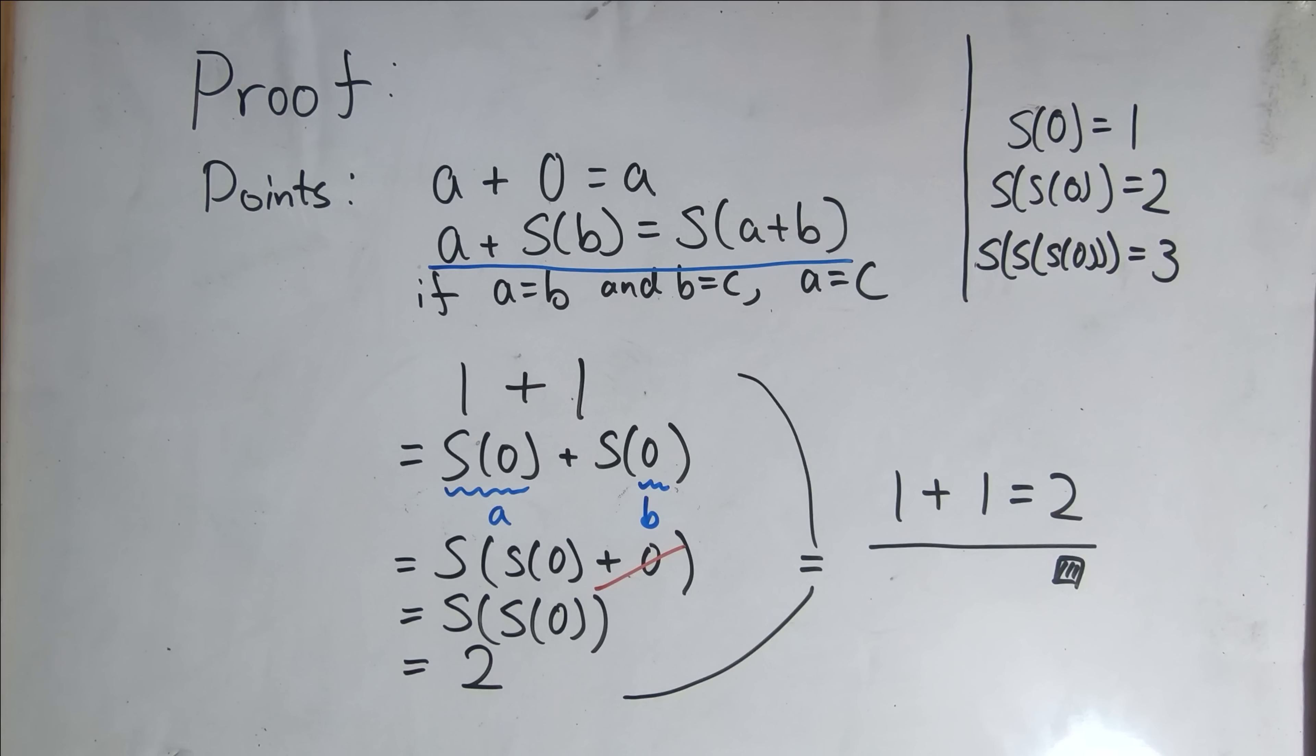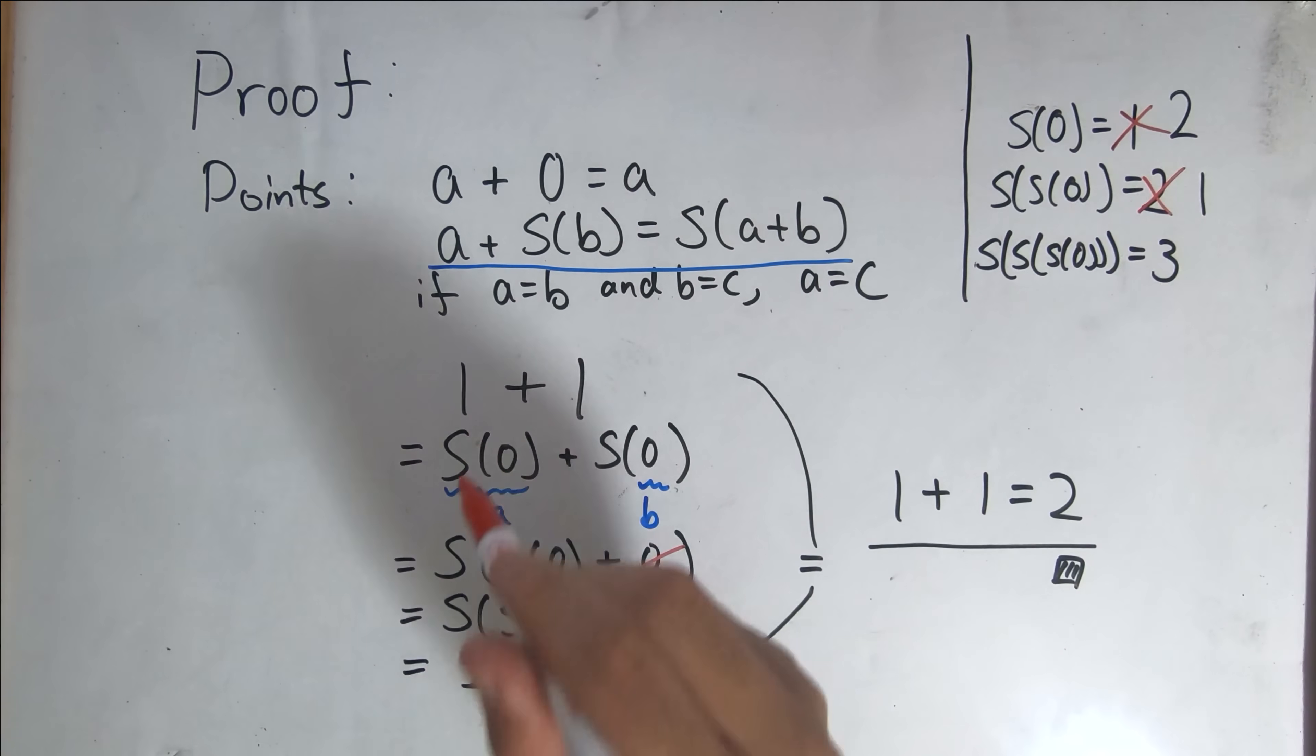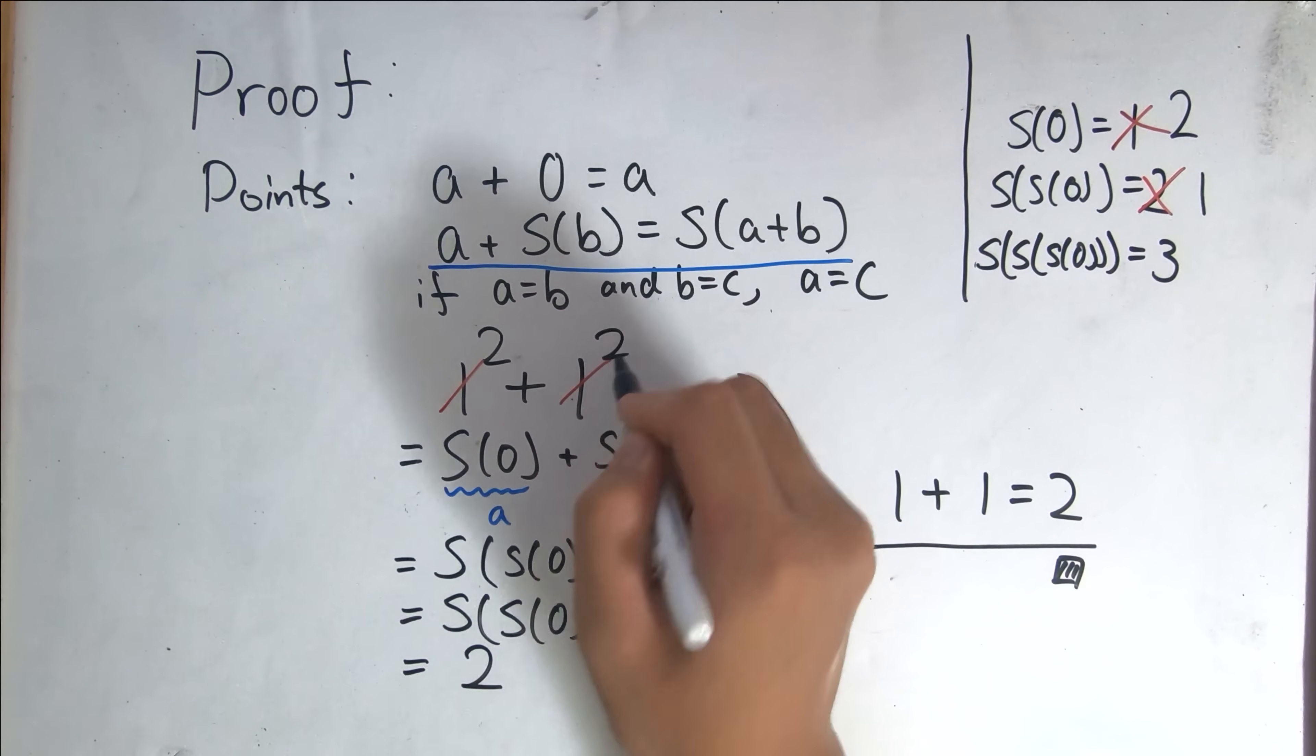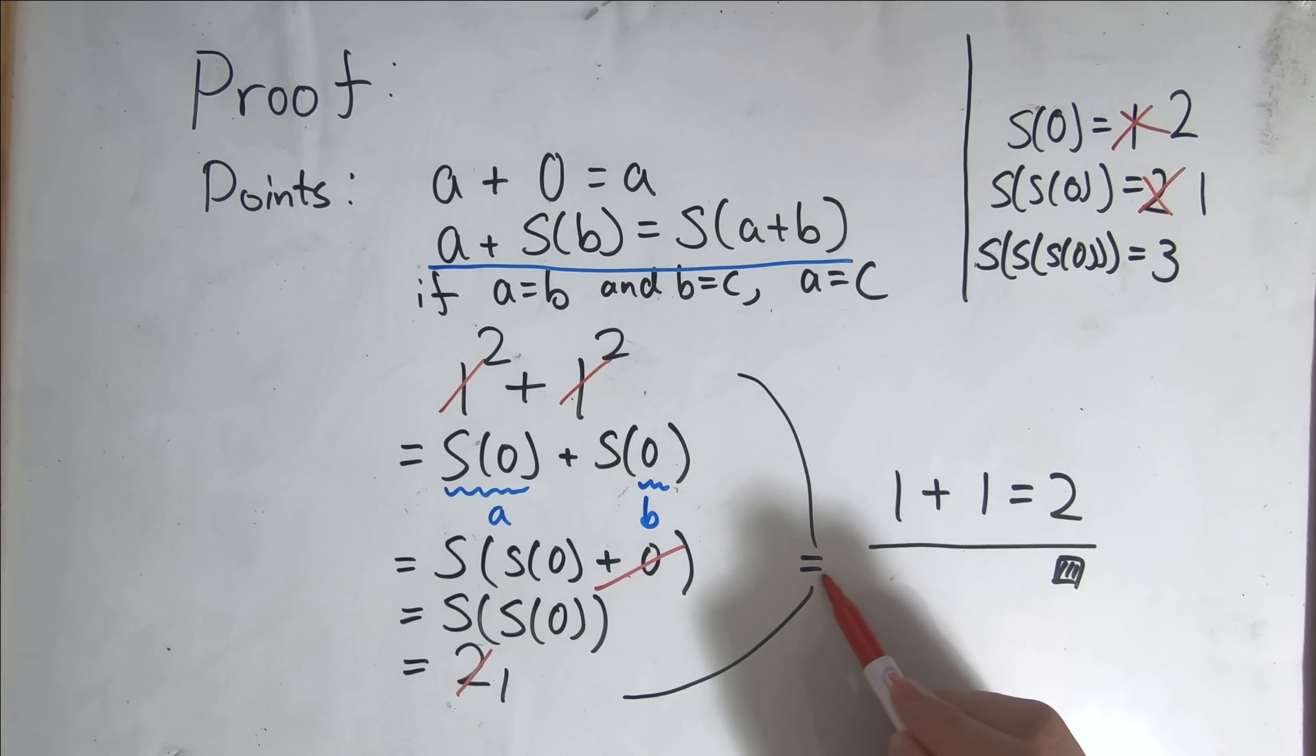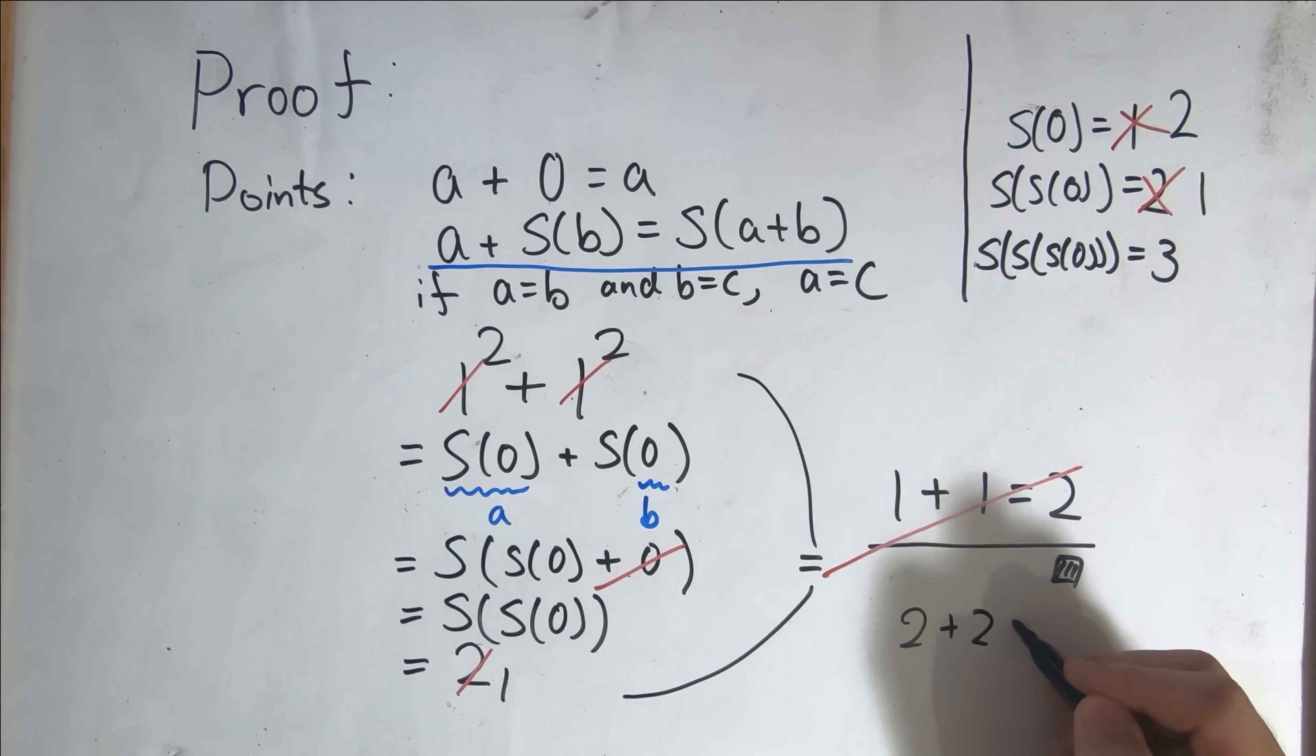When we name each number, we chose that the successor of zero is one, and the successor of the successor of zero is two. But if we were to redefine the successor of zero is equal to two, and the successor of the successor of zero is equal to one, then what we'd end up with is we can change these numerical values to two plus two, and this would end up as one. And so instead of one plus one equals two, we'd end up with the proof that two plus two equals one.